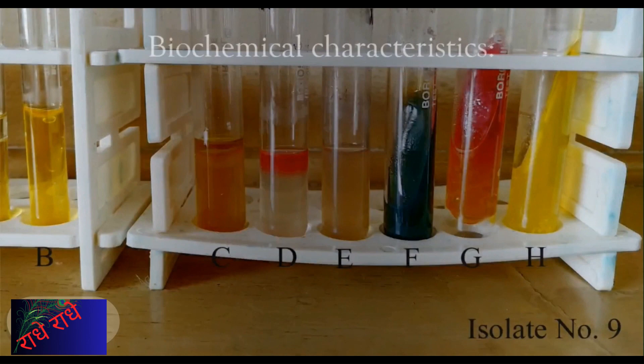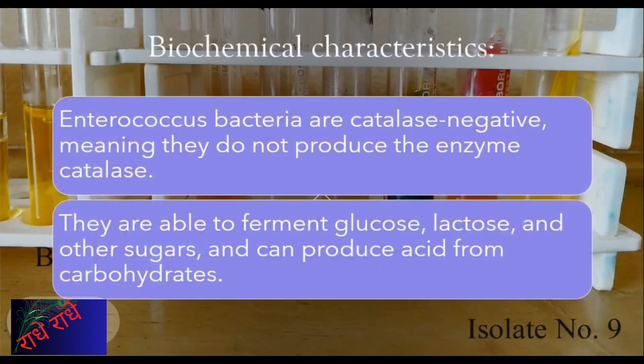Enterococcus bacteria are members of the lactic acid bacteria group, a diverse group found naturally in soil, water, and the intestines of humans and animals. Catalase negative, they are able to ferment glucose, lactose, and other sugars, and can produce acid from carbohydrates. Whether beneficial or pathogenic, such characteristics depend on the type.